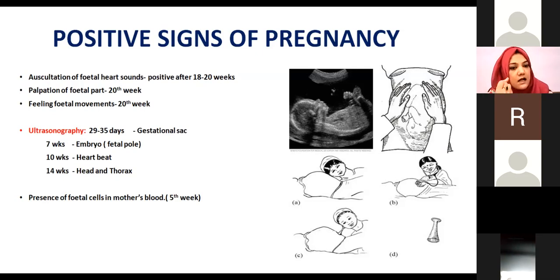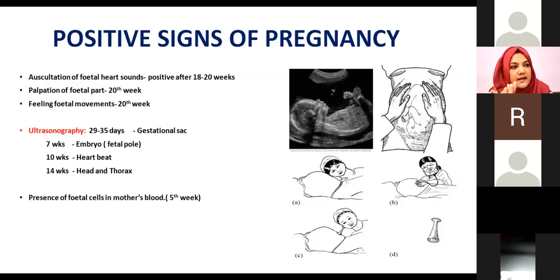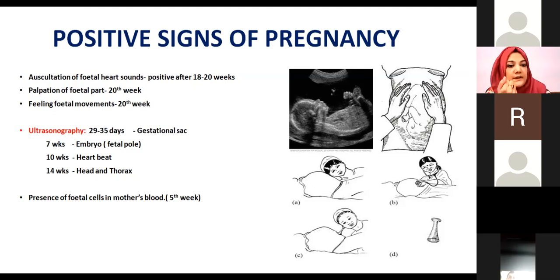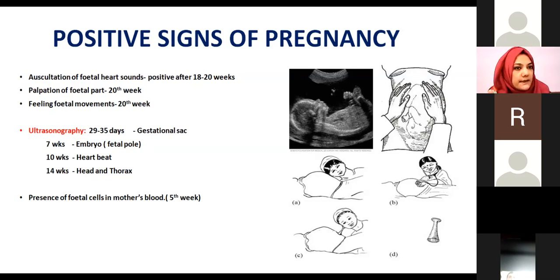Ultrasonography provides positive signs at different time periods. On transabdominal ultrasound from 29 to 35 days, gestational sac can be detected. At approximately 7 weeks, the fetal pole can be identified. At 10 weeks, cardiac activity can be confirmed — if there is cardiac activity, that is a very positive sign of pregnancy, even more so than immunological testing.